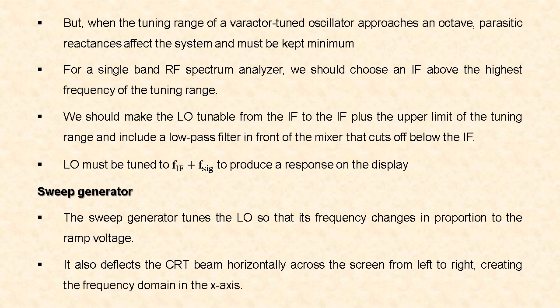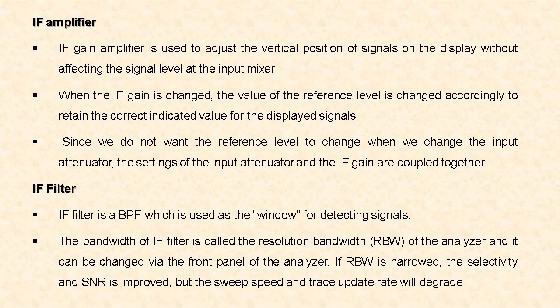Next, the IF amplifier. The intermediate frequency gain amplifier is used to adjust the vertical position of signals on the display without affecting the signal level at the input mixer. When the IF gain is changed, the value of the reference level is also changed accordingly to retain the correct indicated value of the displayed signals. The settings of the input attenuator and IF gain are coupled together so that the reference level does not change when the input attenuator is changed.